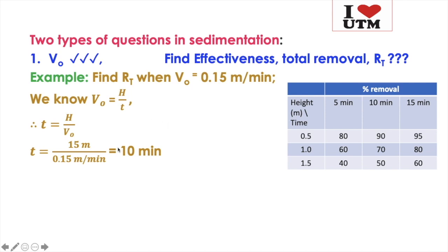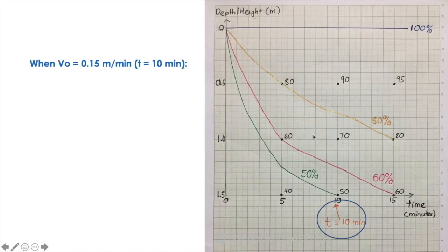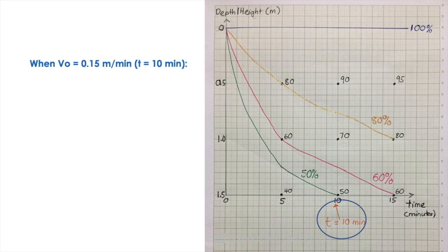You have drawn our graph just now, so focus at 10 minutes on that graph. So this is the graph I have just drawn — focus at 10 minutes right there. Now we would like to find out the effectiveness at 10 minutes: how many percentage of particles can be removed? Is it 100%, 90%, 84%, 83%, 75%? That is what we have to find out.